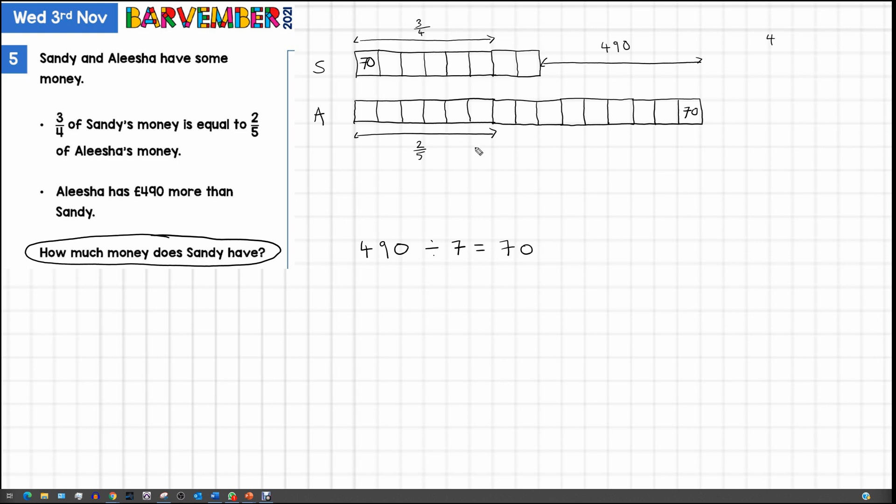So what can we work out now? We should always go back to the question and make sure that we're answering that. How much money does Sandy have? Let's see how many blocks Sandy has: 1, 2, 3, 4, 5, 6, 7, 8.